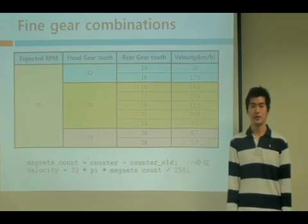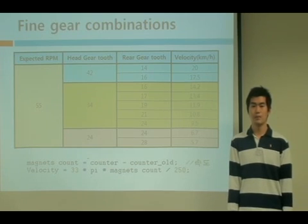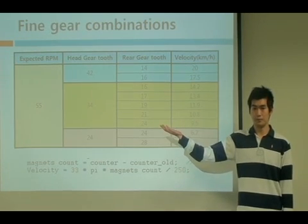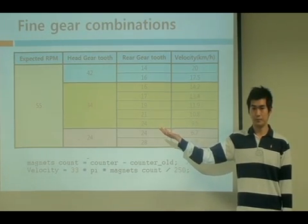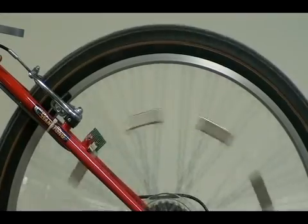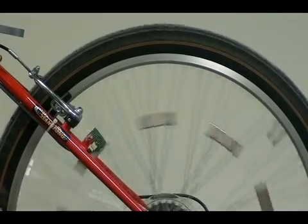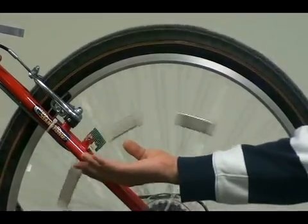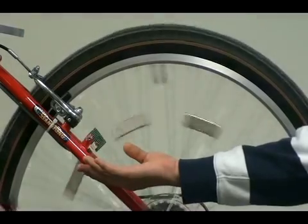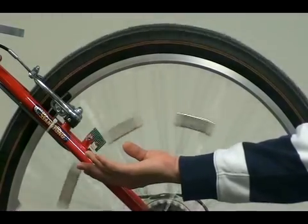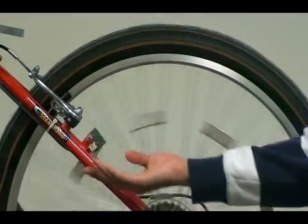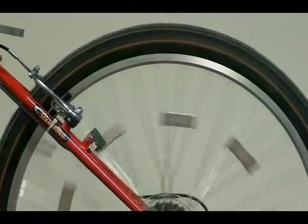The system will control the shifter based on the speed of the bicycle. The magnets pass by the sensor, and the sensor generates signals. Then the system can calculate the running speed with these signals.